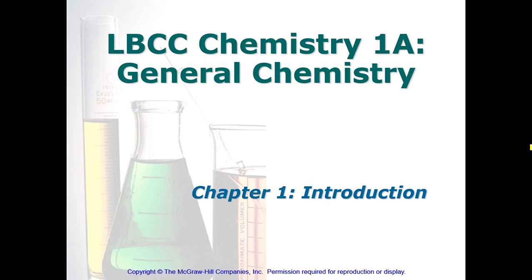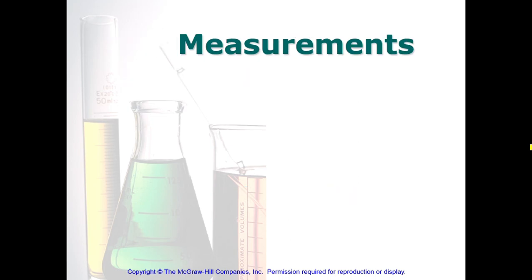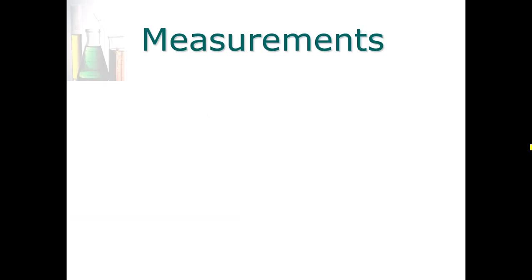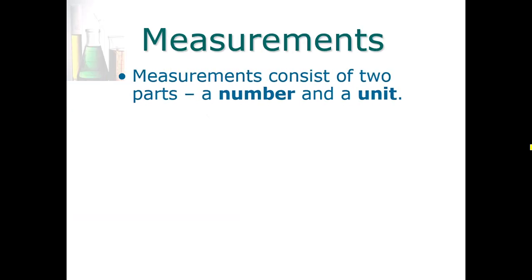Welcome back students, we continue our study of Unit 1, properties and transformations of matter. In this section, we're going to talk about measurements. All of the math that we do in chemistry typically deals with not abstract quantities but what we call measurements. A measurement consists of two parts: it has a number and it has a unit.